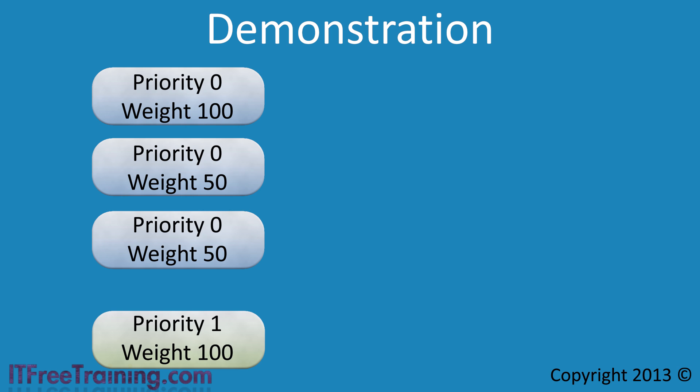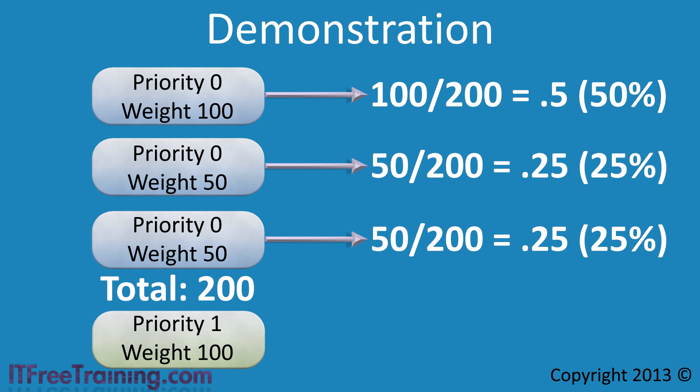To determine this, DNS will add up the weights of all the service records, which in this case gives a total of 200. The weight is then divided by the total to give a percentage. The first service record will be used 50% of the time, and the second and third service records will each be used 25% of the time. The fourth service record will not be used because its priority value is higher than the other three.